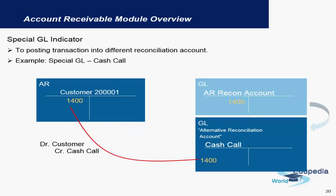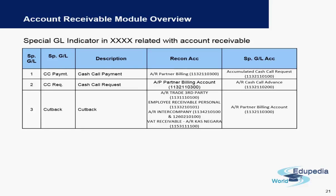Special GL indicators are mainly used for any advance payments made by the customer. For example, once an invoice is posted for a customer, you can have a reconciliation account for a cash call which gets automatically posted to. A special GL indicator is something that you add during the special GL posting.